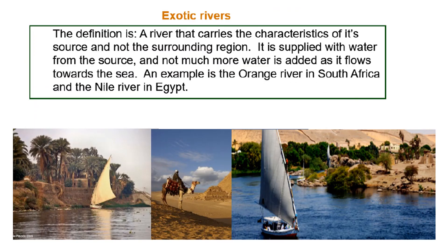Exotic rivers — it's a definition I'd like you to know, please. A river that carries the characteristics of its source and not the surrounding region. In South Africa, we've got the Orange River. At the top of Africa, we have the famous Nile River in Egypt.